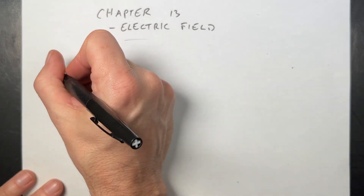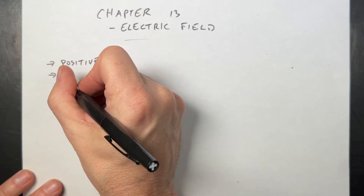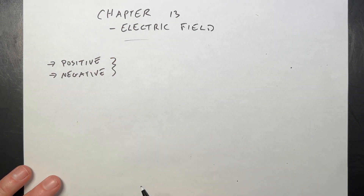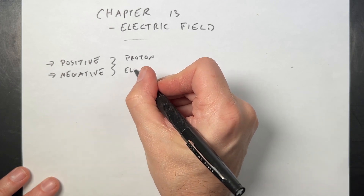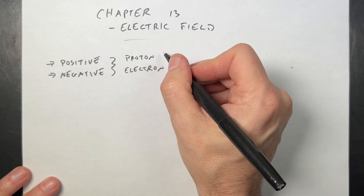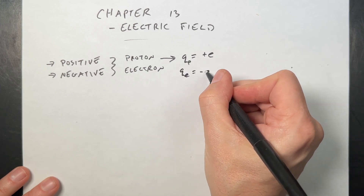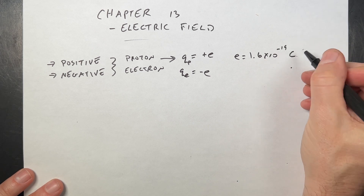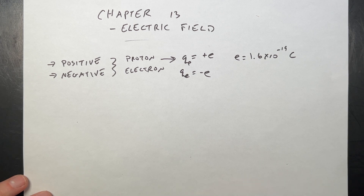Let's start with some fundamental things. We have two types of charges: positive and negative — not super surprising. When we talk about fundamental charges at this level, those two types consist of the proton and the electron. The proton has charge Q_p = +e, and the charge of an electron Q_e = −e, where e is a fundamental constant with a value of 1.6 × 10⁻¹⁹ coulombs — the unit we use for charge.